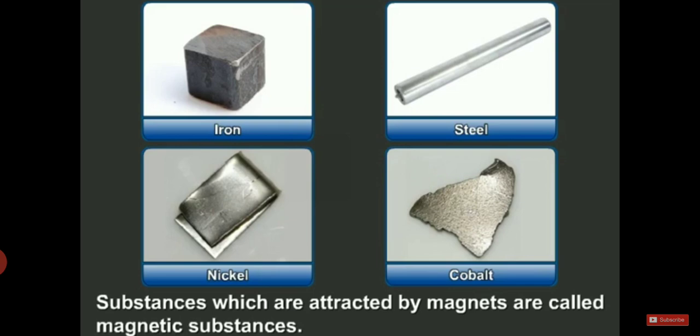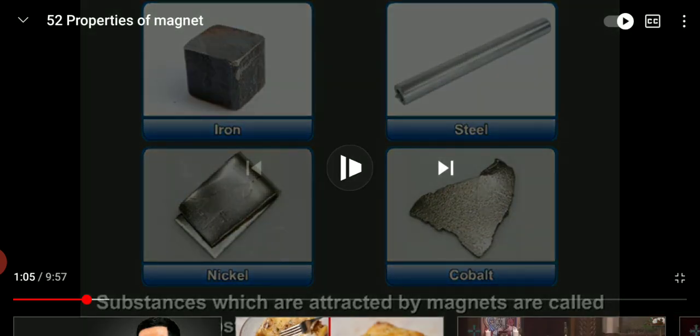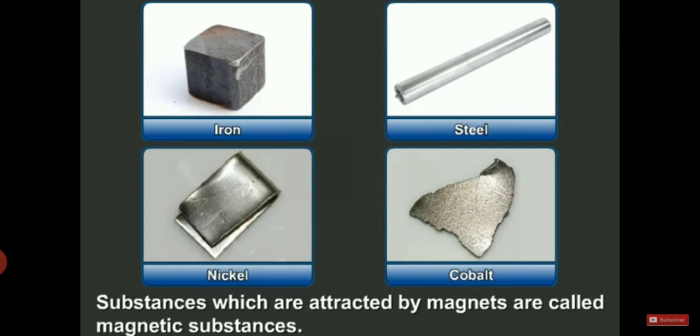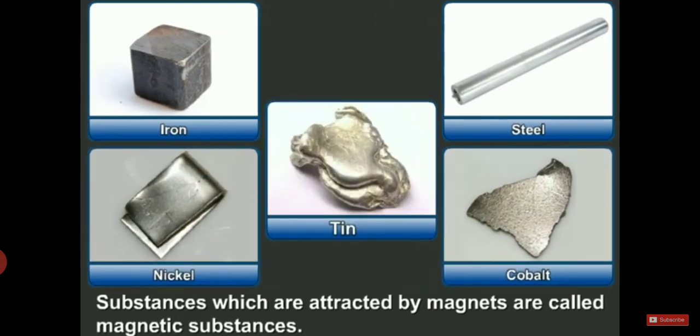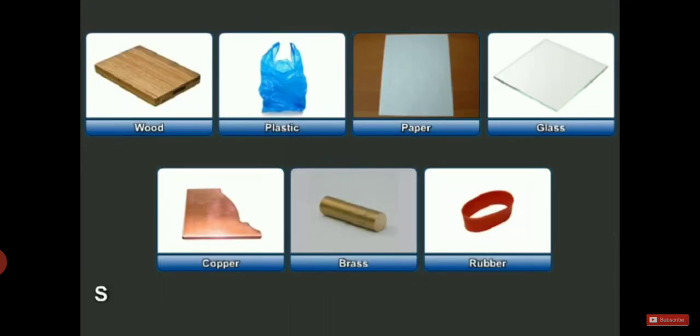As you see, iron, steel, cobalt, and nickel are the metals that can be attracted to magnets, and these metals are called magnetic materials. As you see in the picture, tin is also a magnetic material.